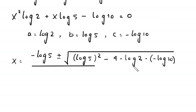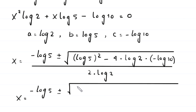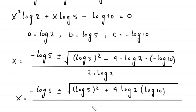So x equals negative log of 5 plus or minus the square root of log of 5 squared, and the term negative 4 times log of 2 times negative log of 10 becomes plus 4 times log of 2 times log of 10, all divided by 2 times log of 2.